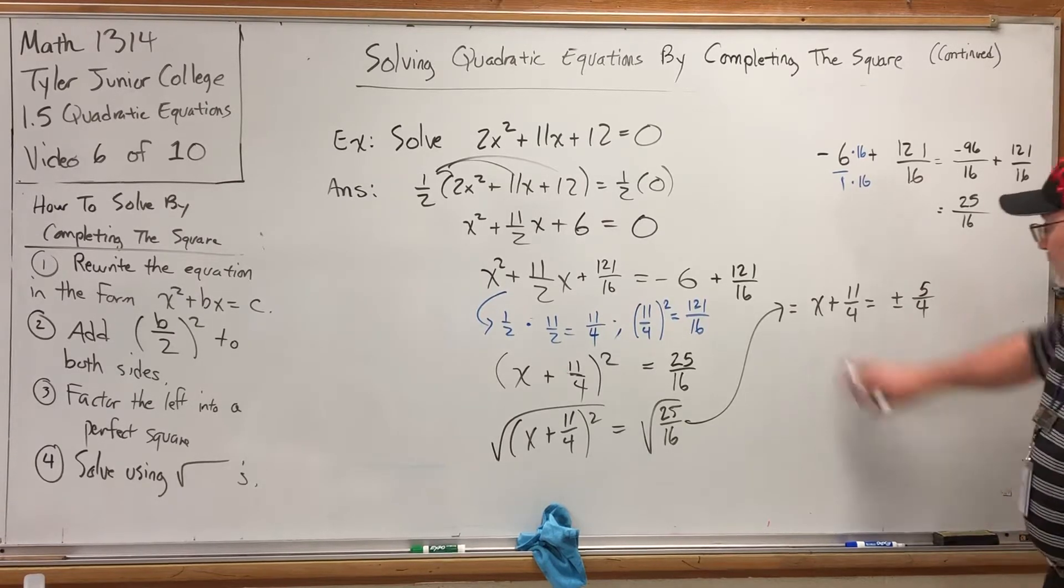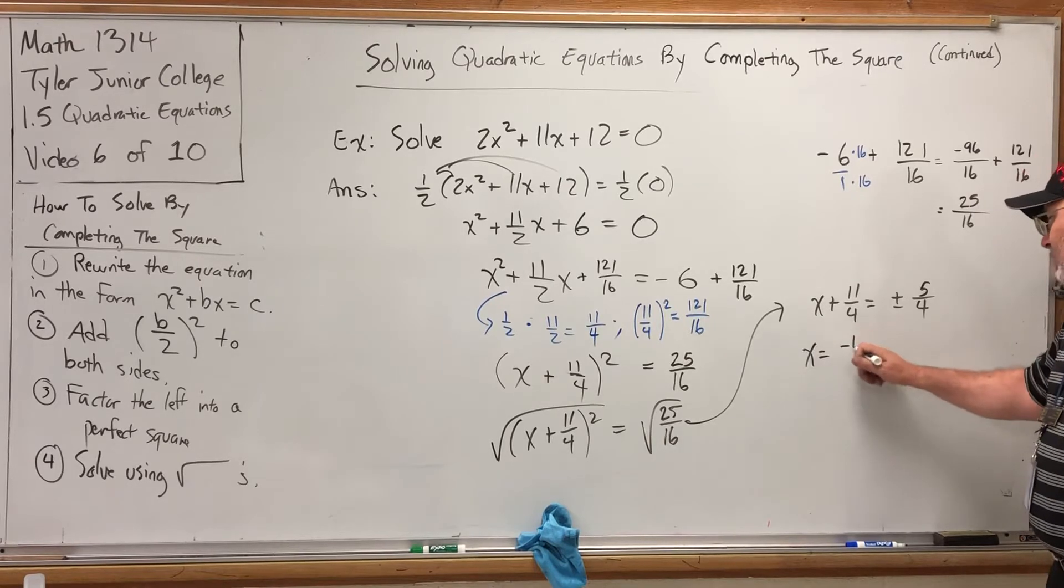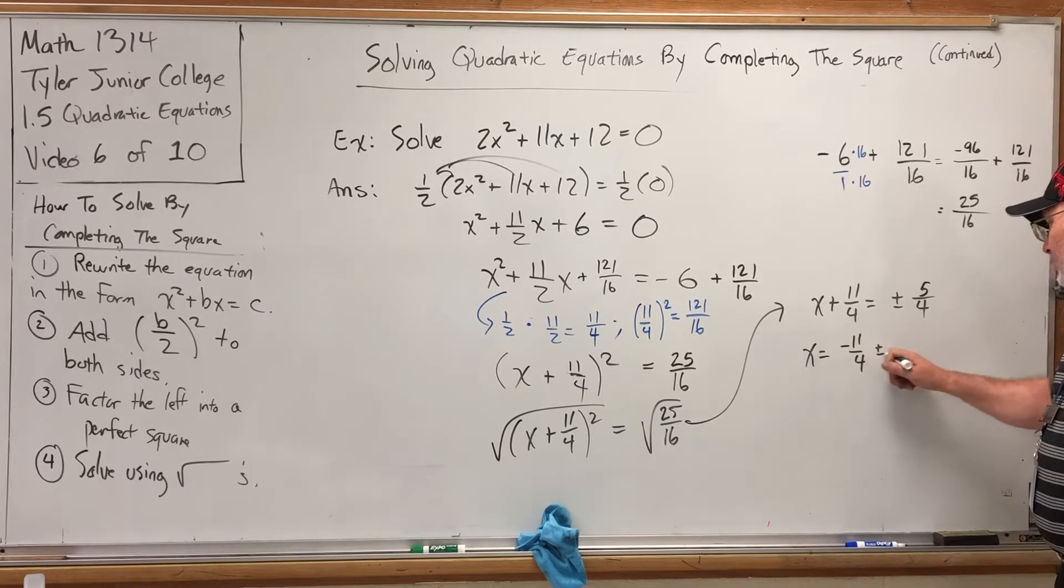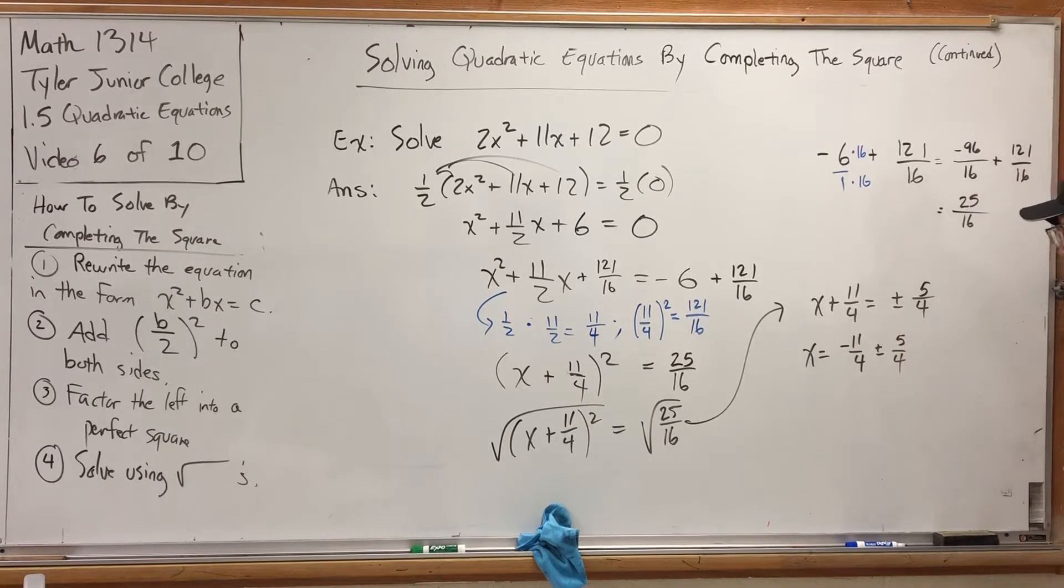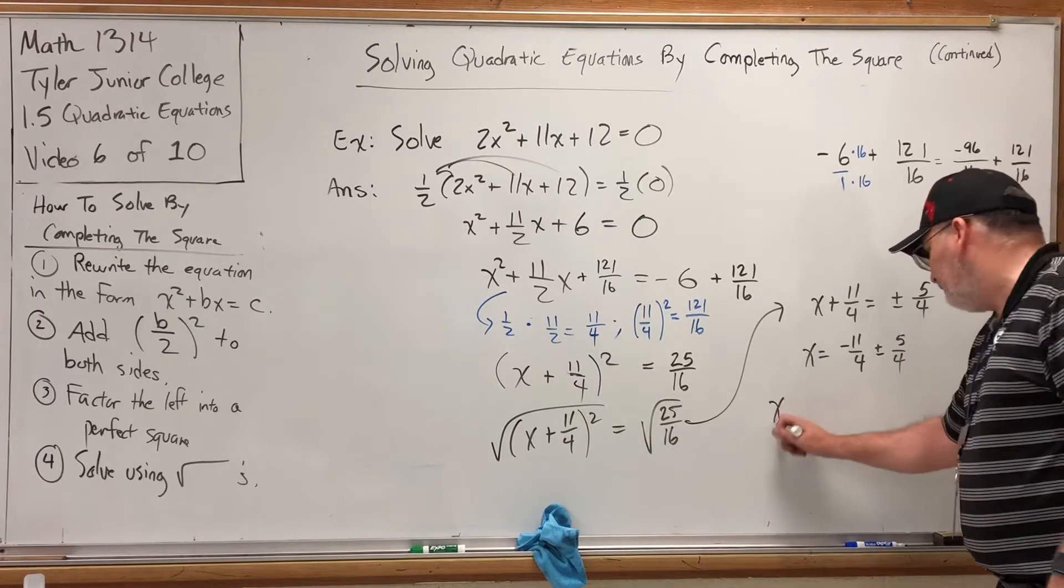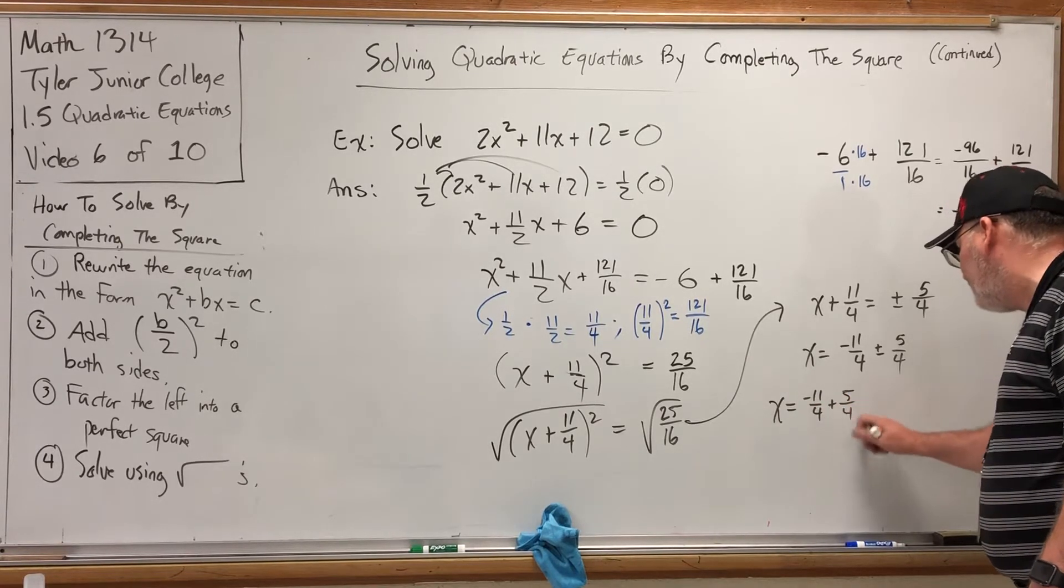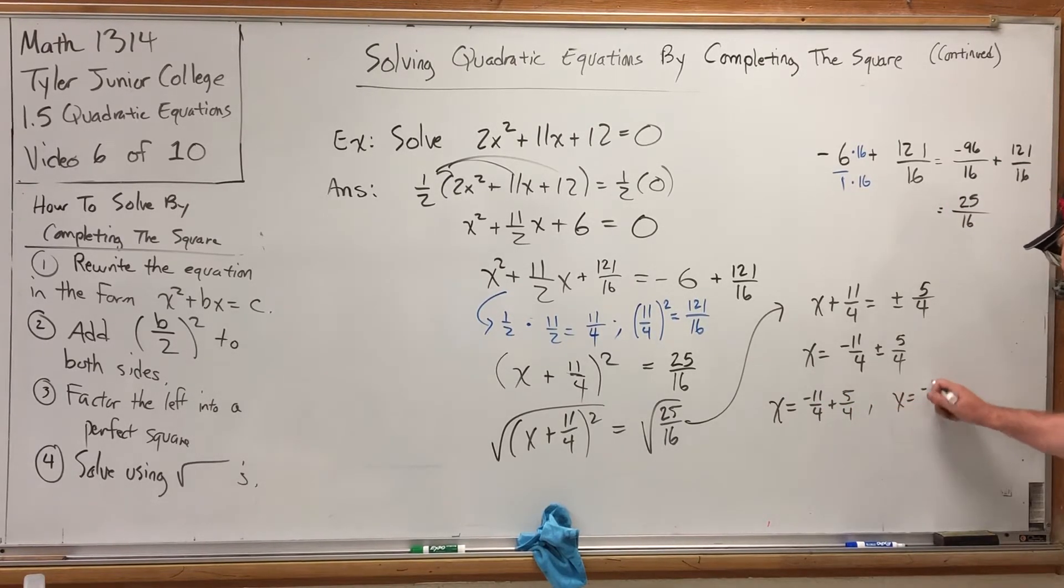Still not done yet. Subtract 11 fourths from both sides, and we get x equals negative 11 fourths plus or minus 5 fourths, which I can do, so I should split the plus minus. x equals negative 11 fourths plus 5 fourths is one solution, and x equals negative 11 fourths minus 5 fourths is the other.